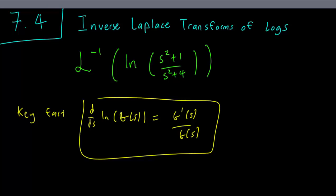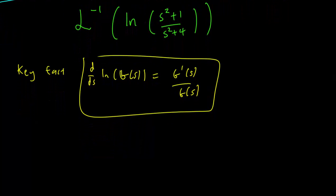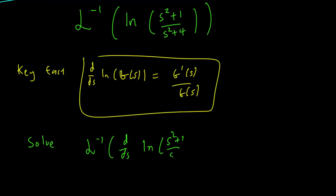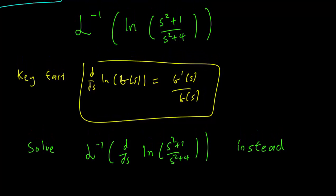So we don't know how to solve this problem, but let's try to solve a similar but easier problem instead. This is the strategy we'll use for a lot of these inverse Laplace transform problems. The idea is to solve this instead: the inverse Laplace transform of the derivative of log((s²+1)/(s²+4)). This obviously isn't going to give us the same answer as the original question, but we hope to modify our solution to get the original problem back.